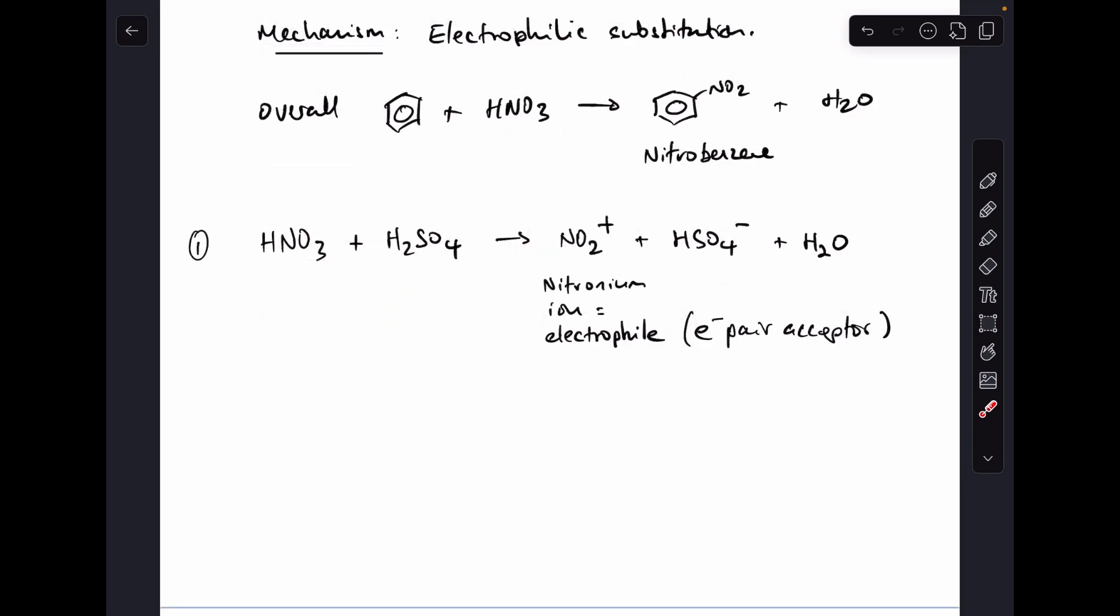Moving on to the mechanism now, we'll break it down into its three steps. Step one: we take the two concentrated acids and react them together, and the purpose of that is to generate this NO2+ ion, which is called the nitronium ion. That's going to be our electrophile, which means it's going to accept a pair of electrons. You'll see that in step two. We also generate this HSO4- ion and the water molecule, which is the non-organic product that we've seen in the overall equation.